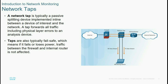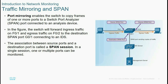Network taps are typically passive splitting devices implementing a line between devices of interest in the network. A tap forwards traffic including physical layer errors to an analysis device. Taps are also typically fail-safe, meaning that if power is lost, traffic passes through based on the firewall and internet router.